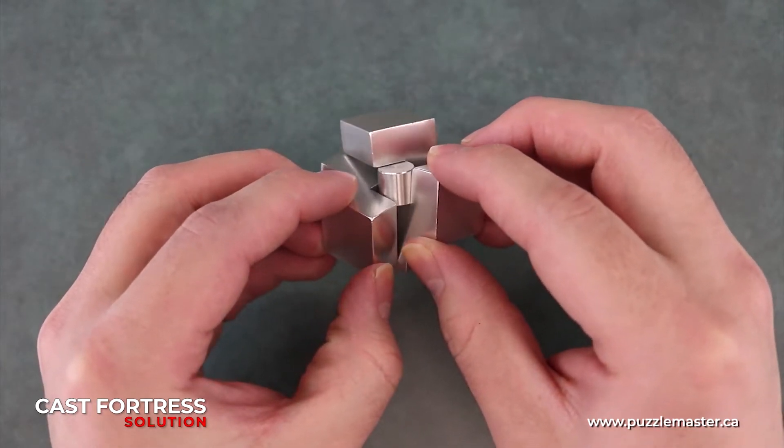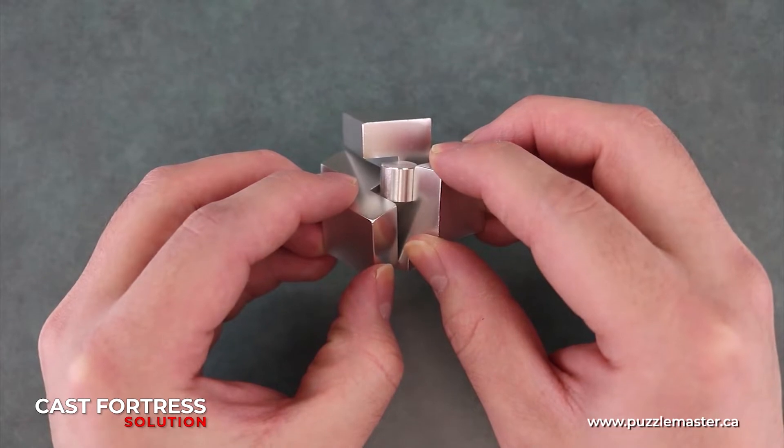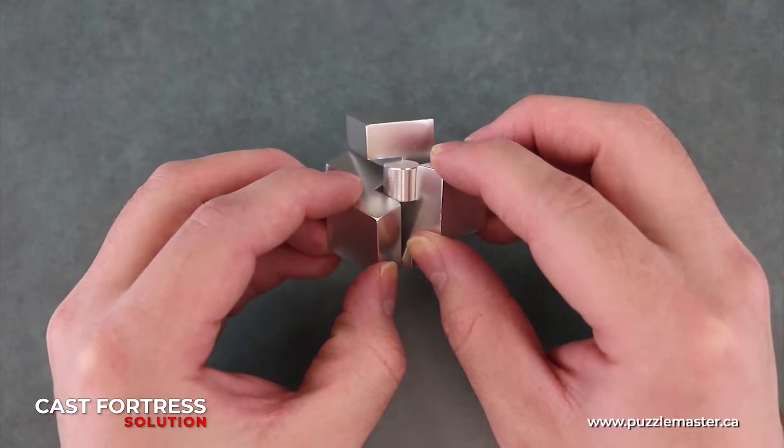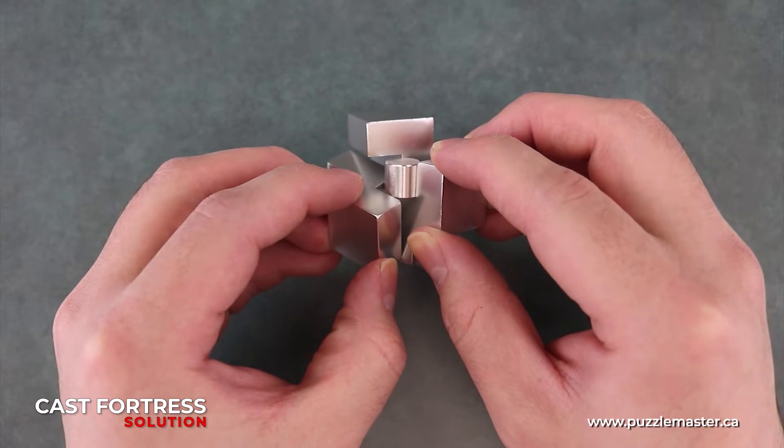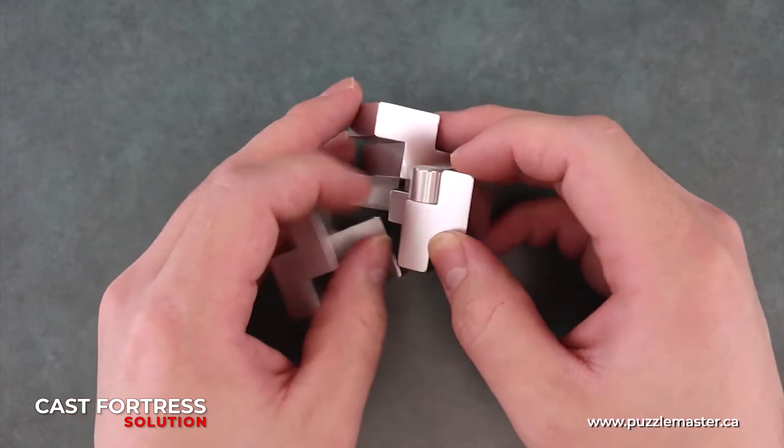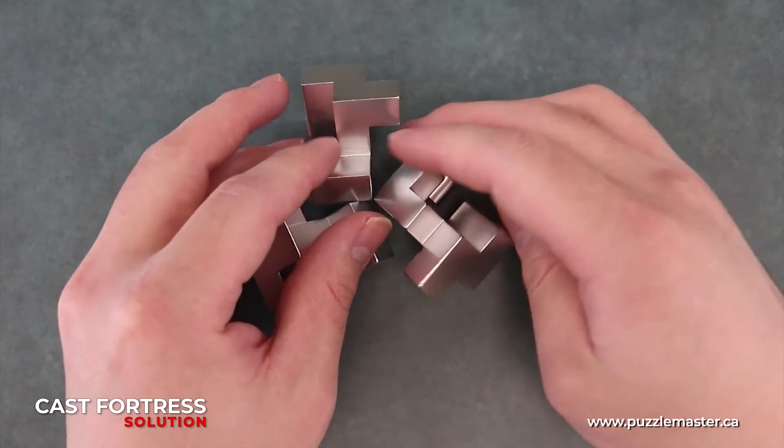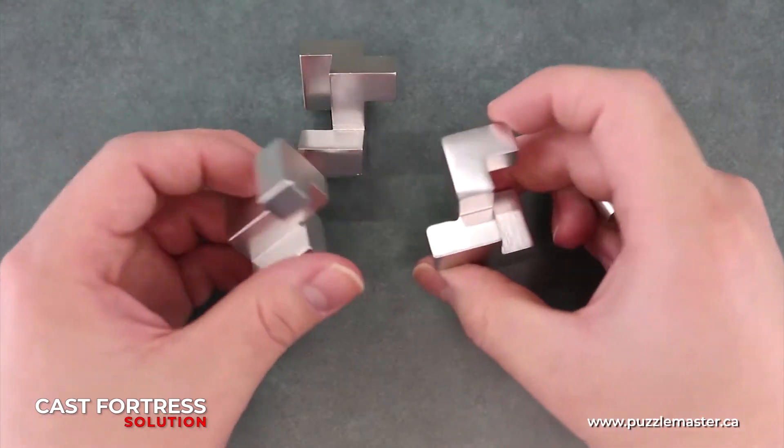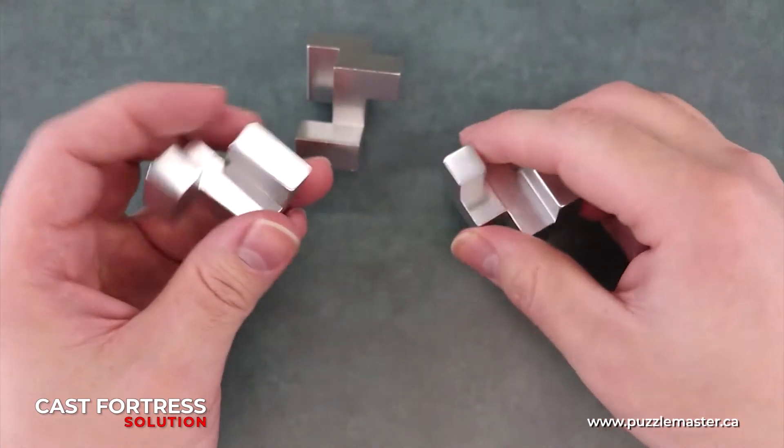So here we have it and we can see it's coming apart. Now we can see there's a small cylinder in there. It's the perfect size to get lost in your couch. So as you can see, it kind of just falls to pieces at this point.